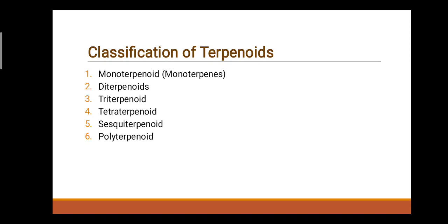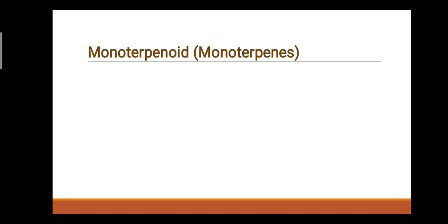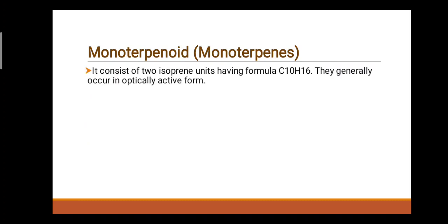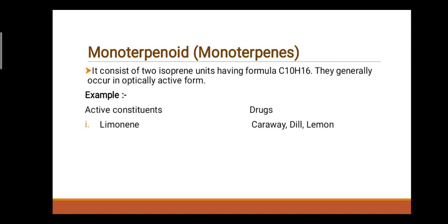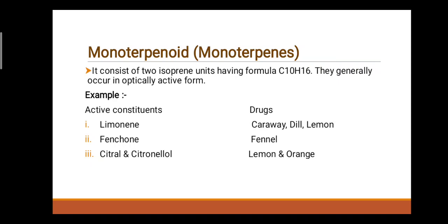First class: Monoterpenoids (Monoterpenes). They consist of two isoprene units having formula C10H16. They generally occur in optically active form. Examples — first active constituent: Limonene, drugs: caraway, dill, lemon. Second active constituent: Fenchone, drugs: fennel. Third active constituent: Citronellal, drugs: lemon and orange.